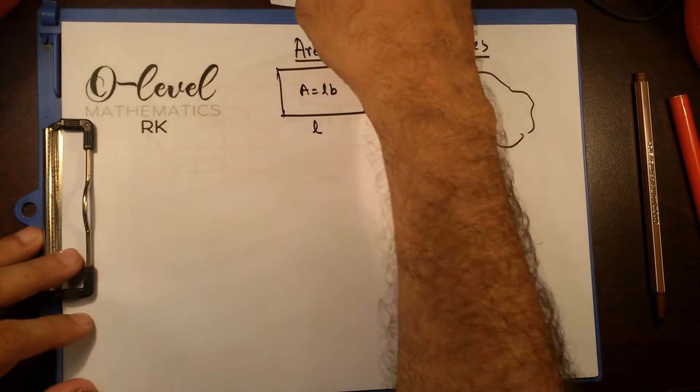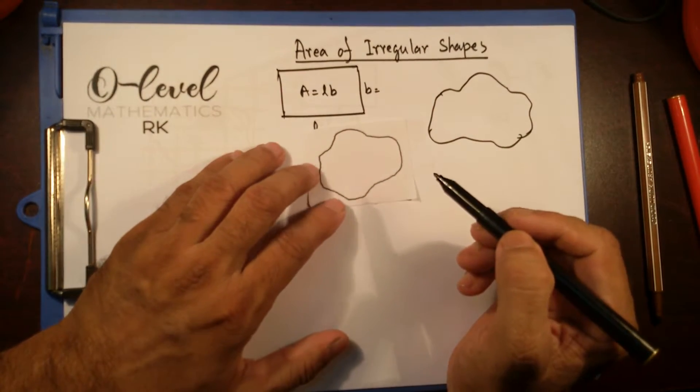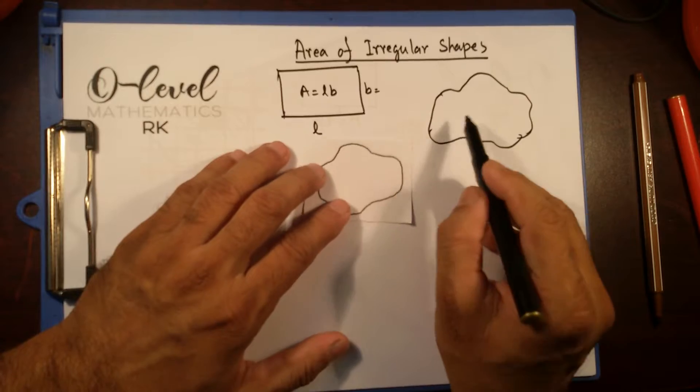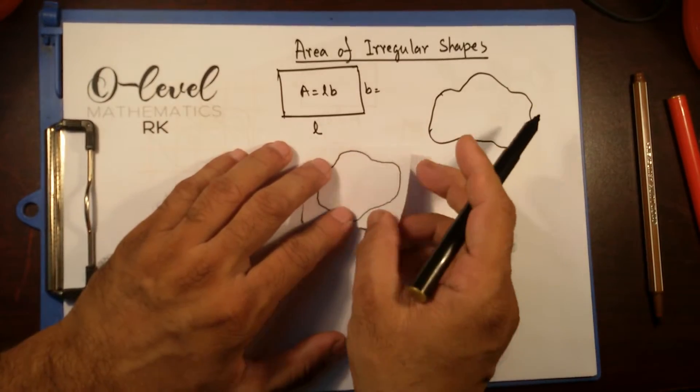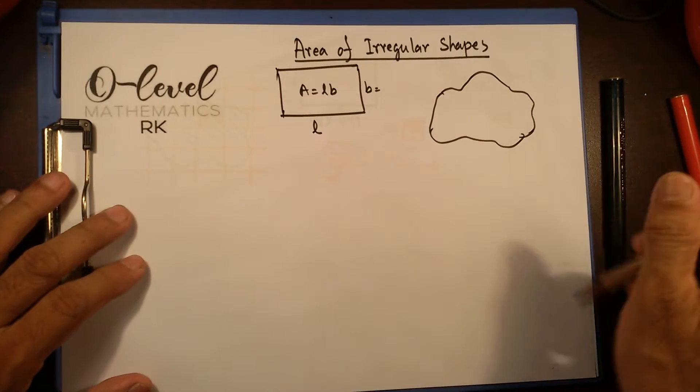Now what if we have any shape something like this? I have a printout of this one. This is irregular shape, it's not rectangular shape. So how can we measure any area like this? There is one smart way mathematicians find it out.